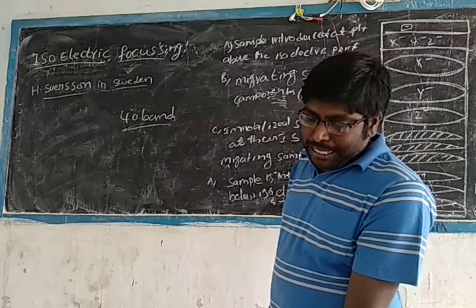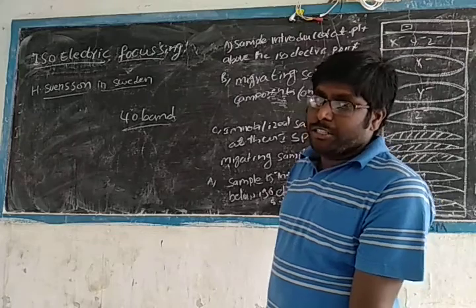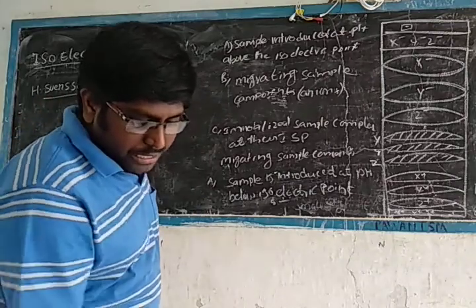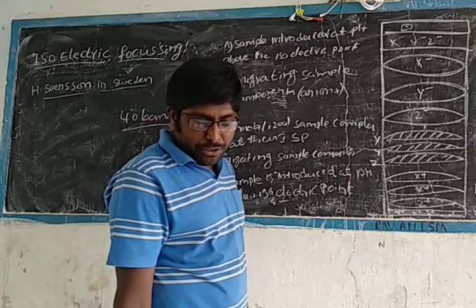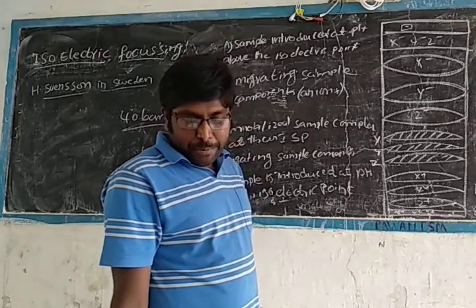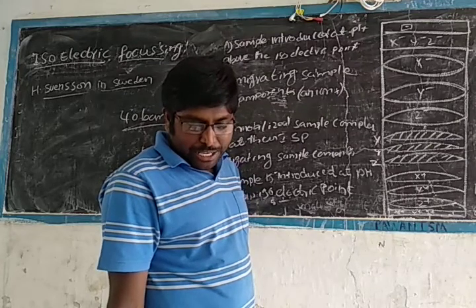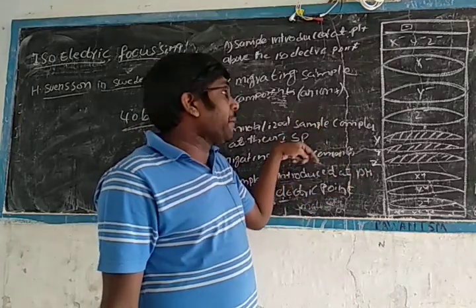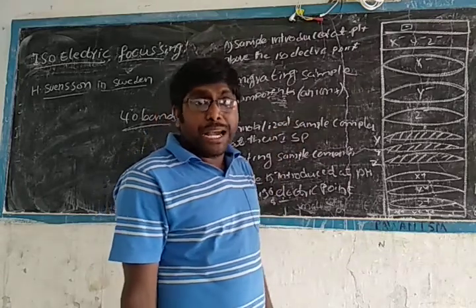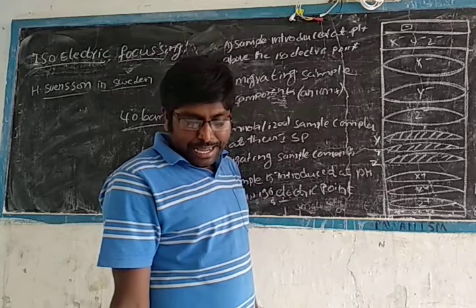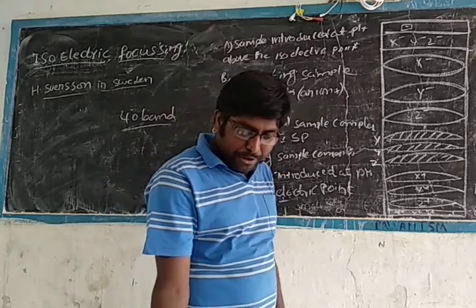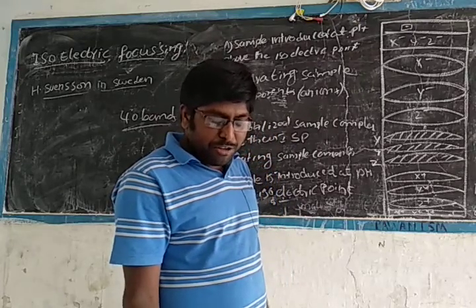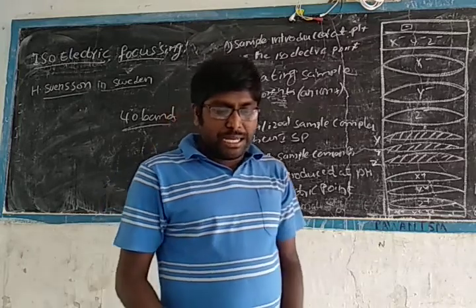In isoelectric focusing, a pH gradient is established between the anode and cathode. The pH between the anode and cathode is kept constant. Positively charged ions migrate toward the cathode. The anode and cathode maintain a stable gradient, and ionization alters the charge of molecules.